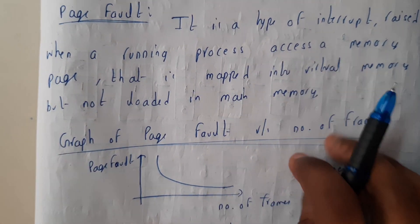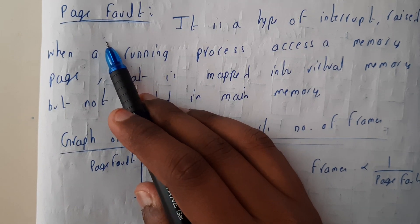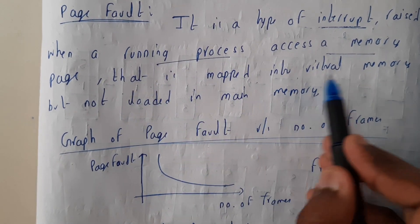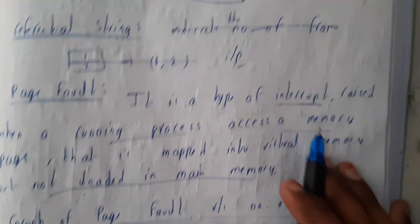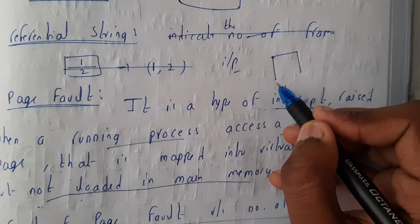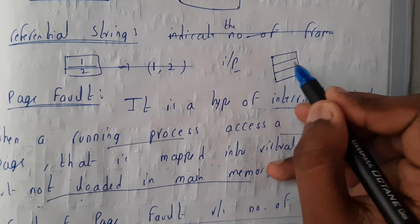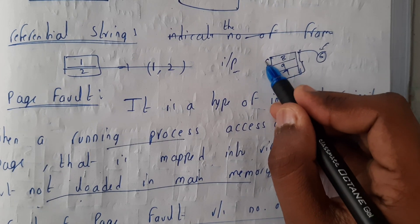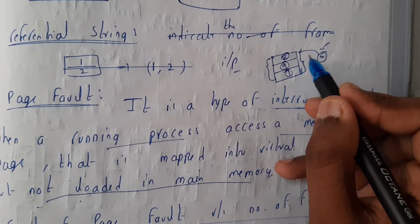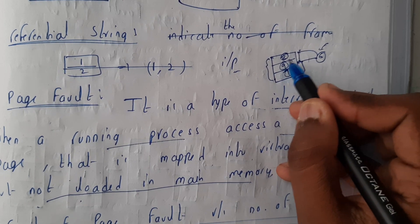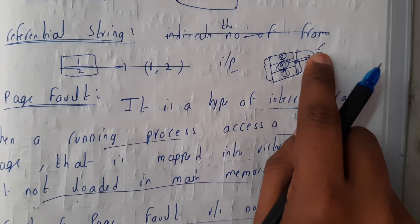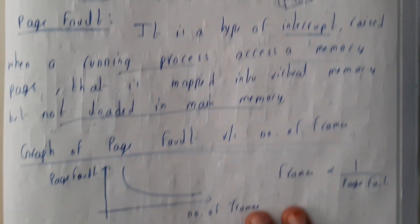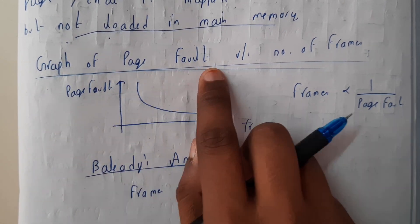Throughout these algorithms we'll be talking about page fault. Page fault is a type of interrupt raised when a running process accesses a memory page that is mapped into virtual memory but is not loaded into the main memory. For example, if we have pages 8, 9, and 7 in main memory and a new page 6 comes in, it's not there — so we replace something. That swap-in and swap-out combined is called a single page fault.